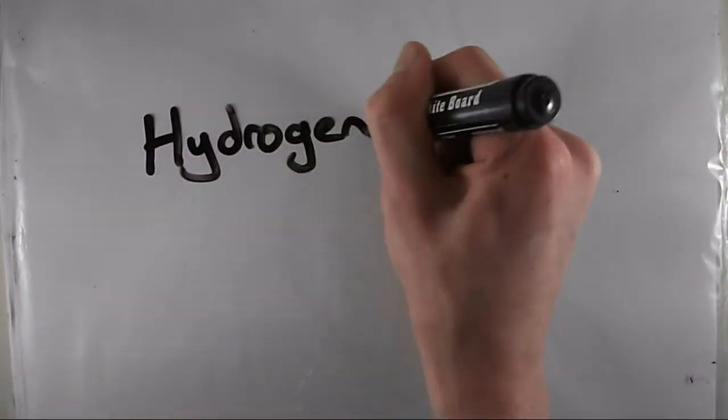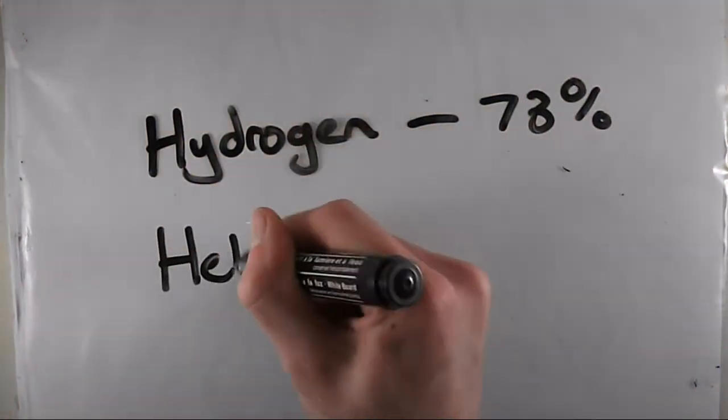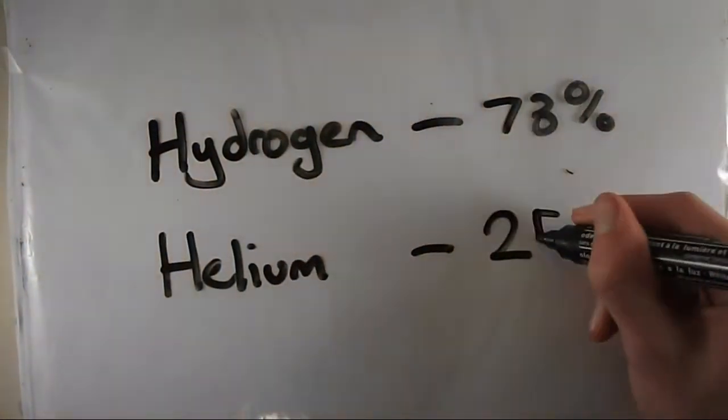The Sun is mostly made up of hydrogen. Hydrogen makes up about 73% of the Sun, while helium makes up about 25% of the Sun.